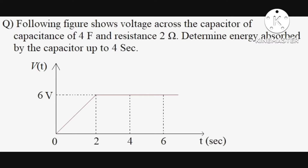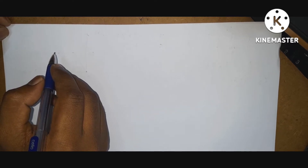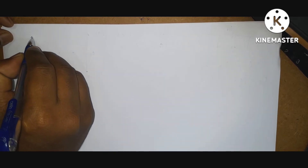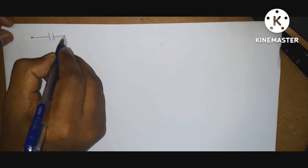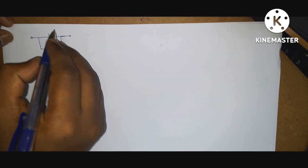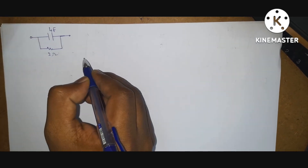Next question. The following figure shows voltage across the capacitor of capacitance 4 Farad and resistance 2 ohms. Determine the energy absorbed by the capacitor up to 4 seconds. In the given question, both capacitance and resistance values are given, so it is a lossy capacitor. A lossy capacitor can be represented as capacitance in parallel with resistance — this is the lossy capacitor: 4 Farad in parallel with 2 ohms.